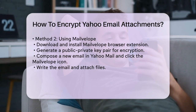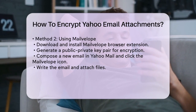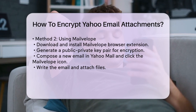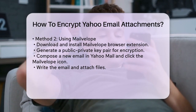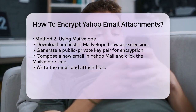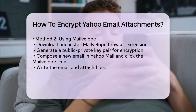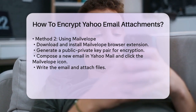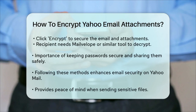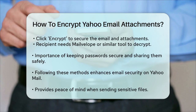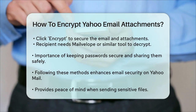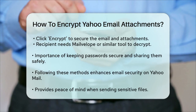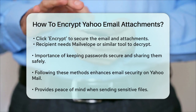When composing a new email in Yahoo Mail, click the MailVelope icon in the top-right corner of your browser. Write your email and attach the files you want to send. Click the Encrypt button to encrypt the entire email, including the attachments, then send the encrypted email. The recipient will need to have MailVelope or a similar tool to decrypt and read the message.